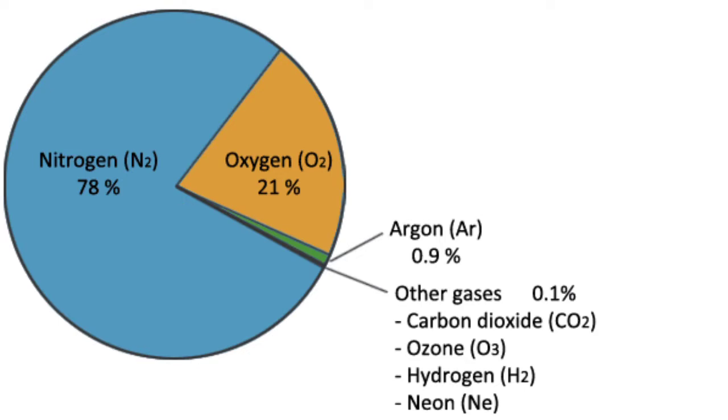We know that the amount of nitrogen in the atmosphere is approximately 78%, and the amount of oxygen in the atmosphere is approximately 21%. In the rest 1%, the other gases are present.